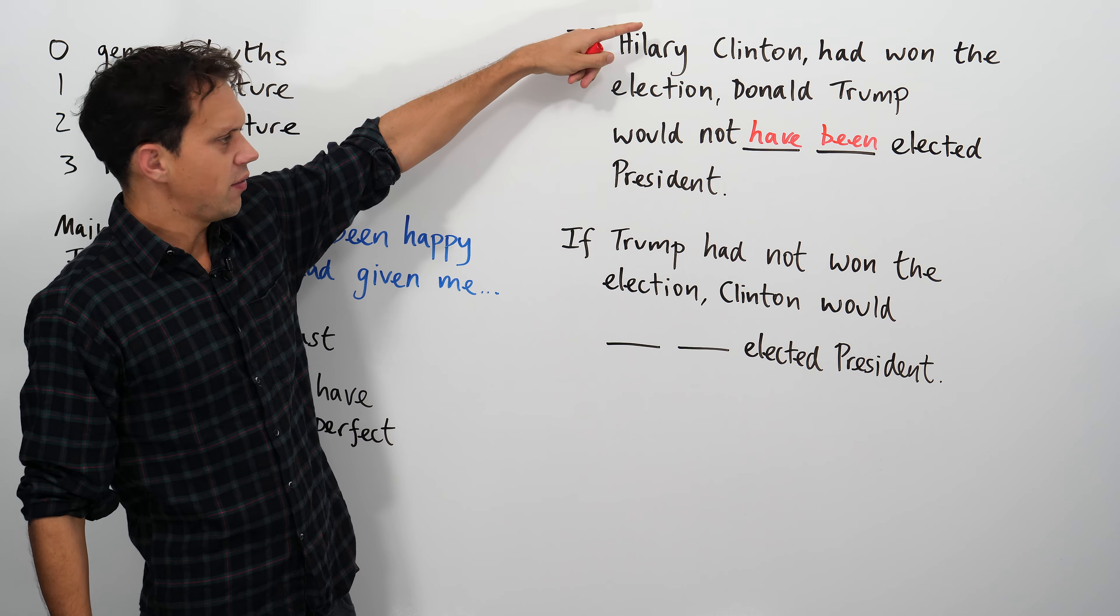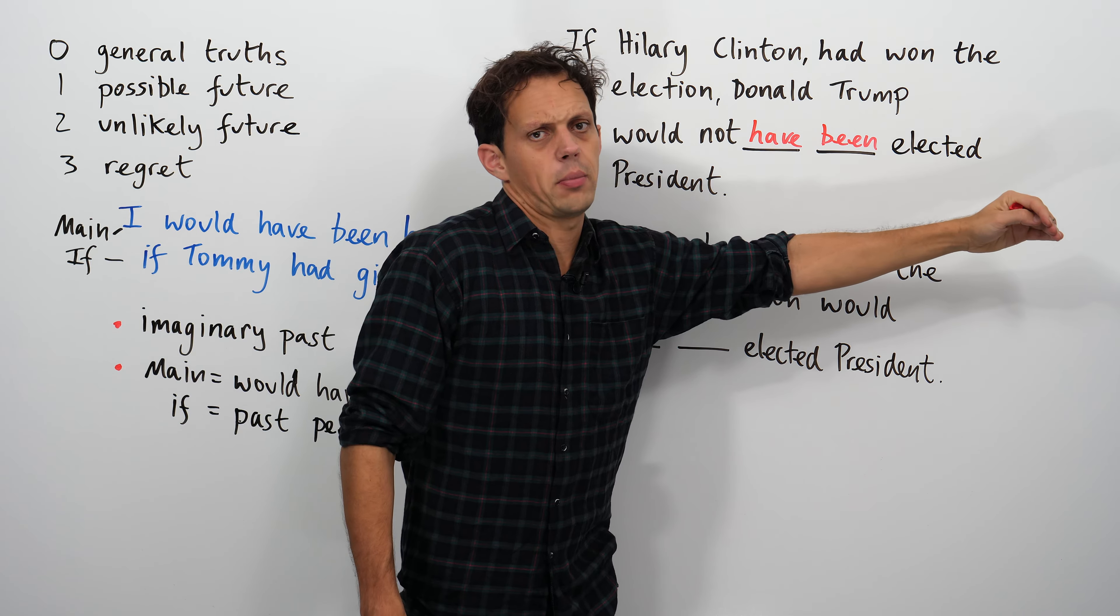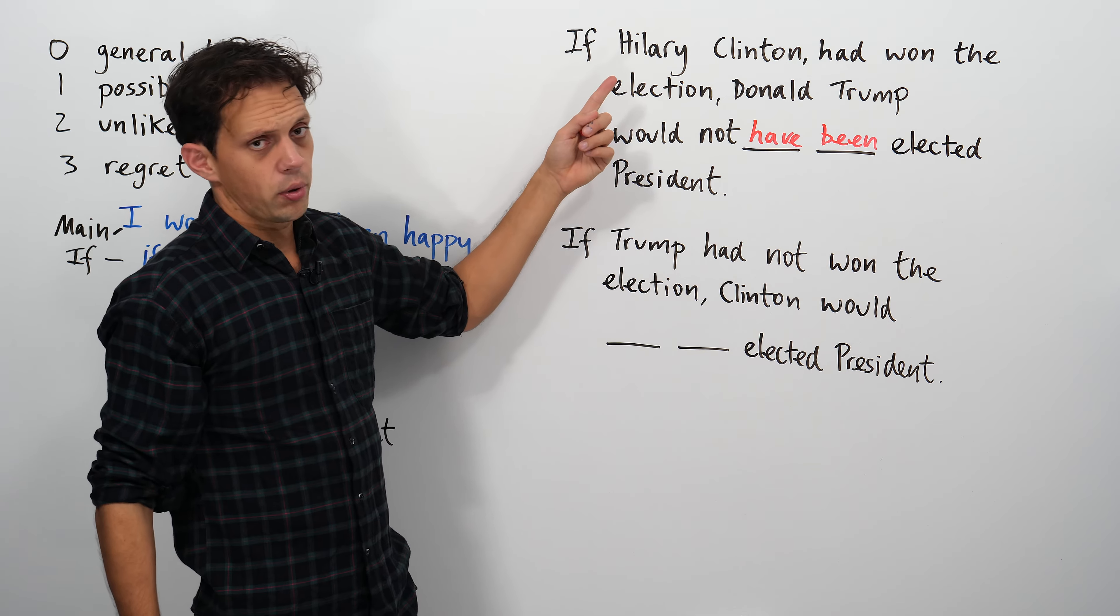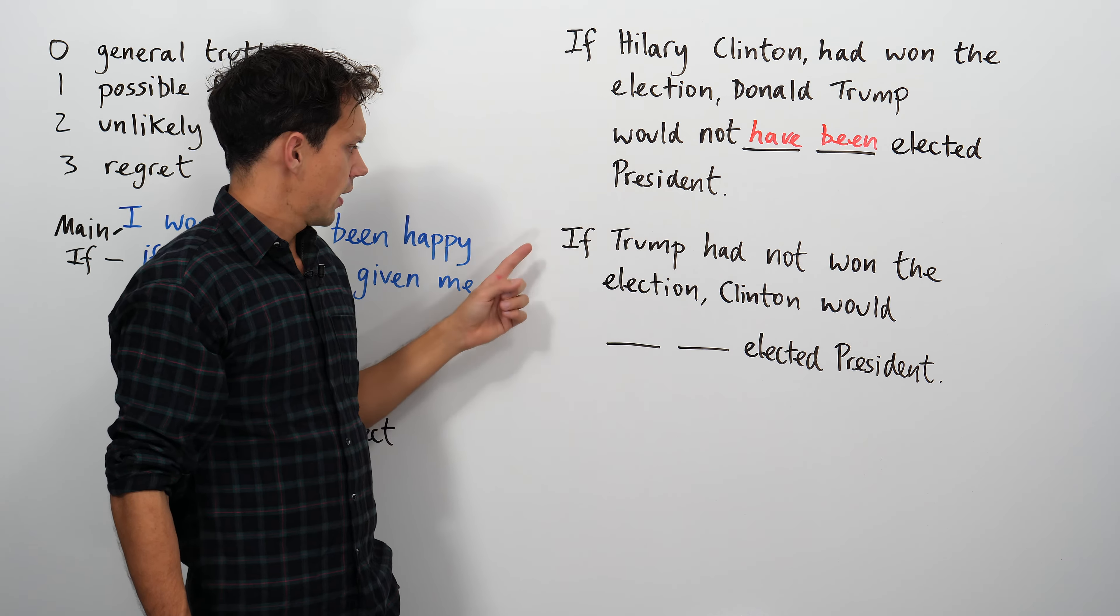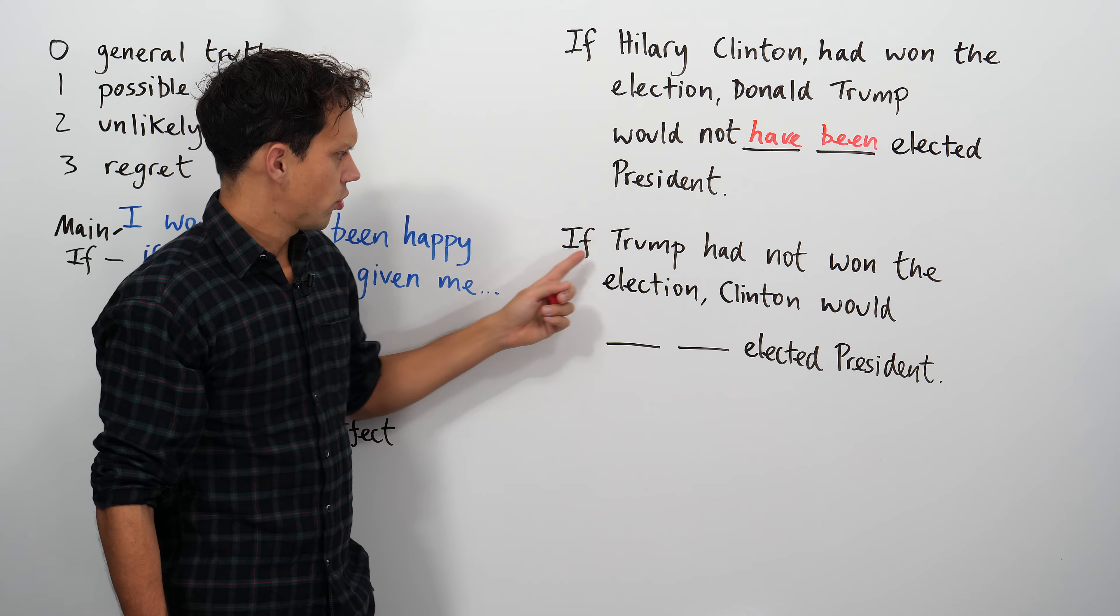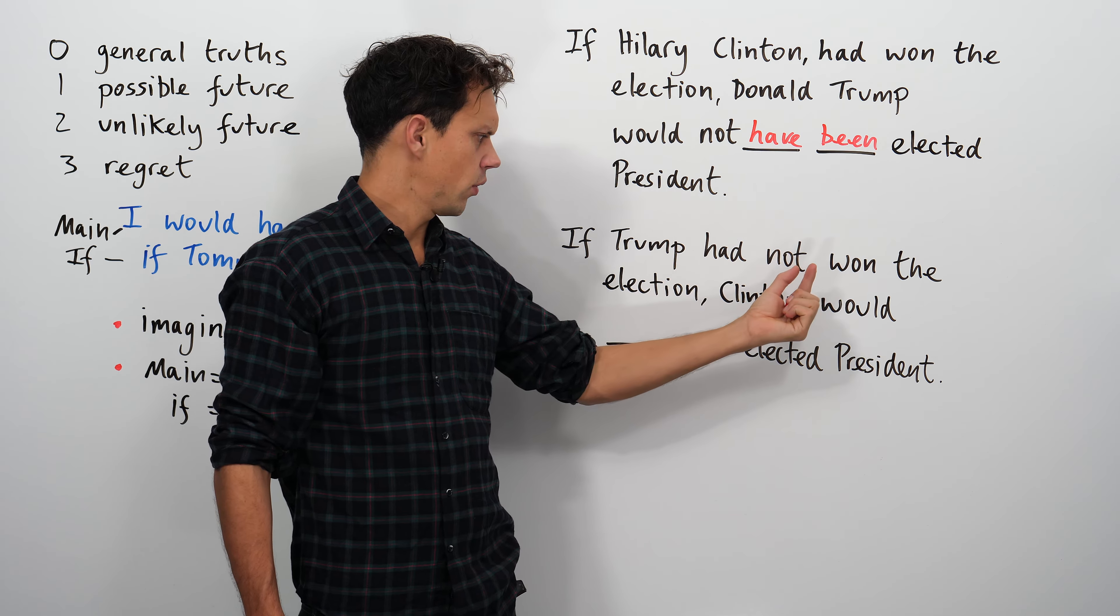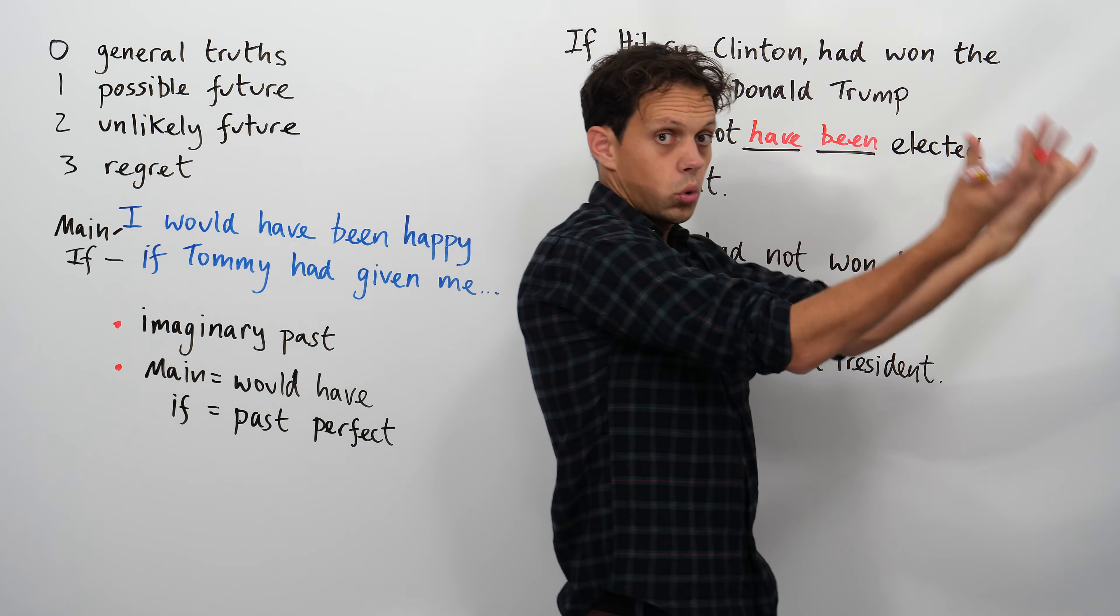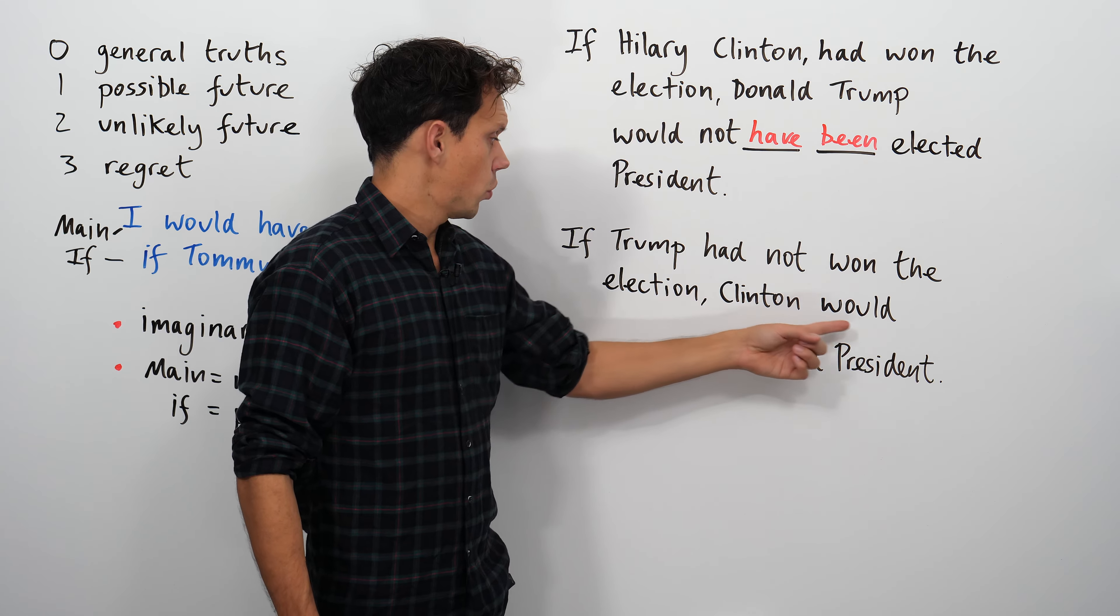So we've got positive. We're imagining if something positive has happened, then this negative thing wouldn't have happened. If we reverse that around... I'm saying positive and negative in a strictly grammatical sense. I'm not going to get too political right now. What about the other way around? If Trump had not won... So we're starting with a negative now. So if something negative had not happened... The election... Clinton would...